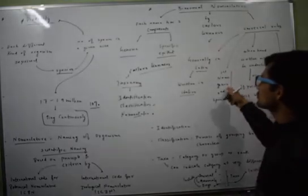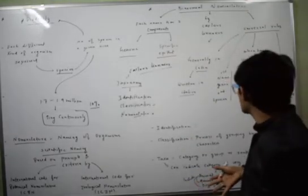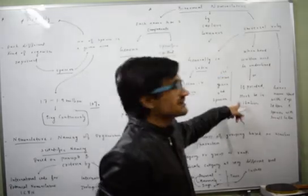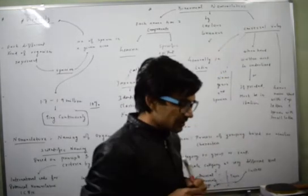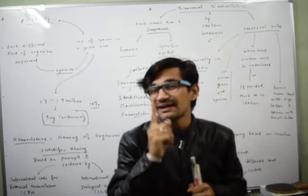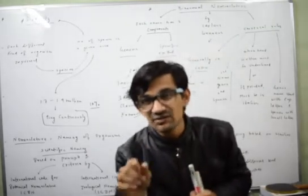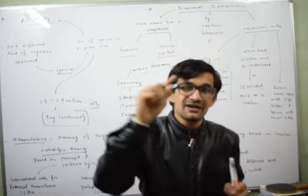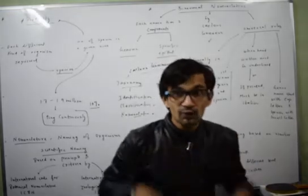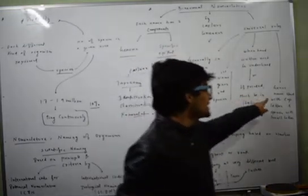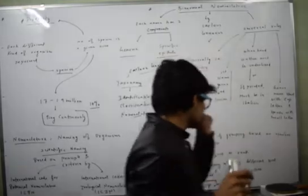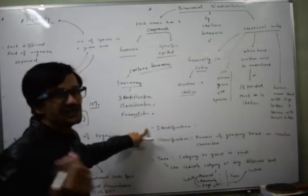The first name denotes the genus and the second name denotes the species. When handwritten, the name must be underlined; when printed, it must be in italics. An important rule is that the genus name will always start with a capital letter, but the species name will start with a small letter — for example, Homo sapiens.